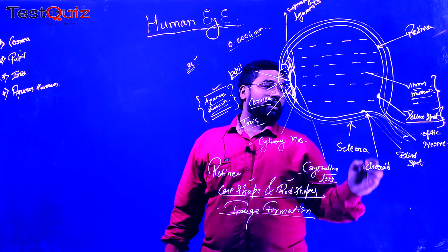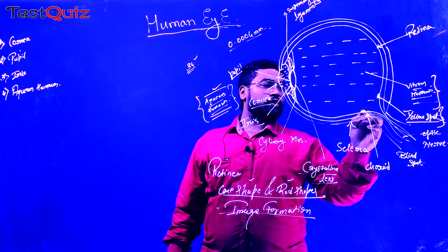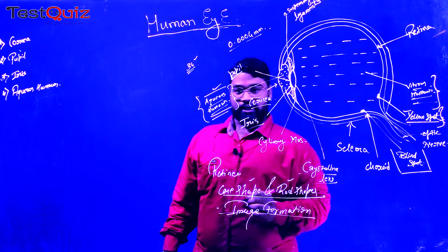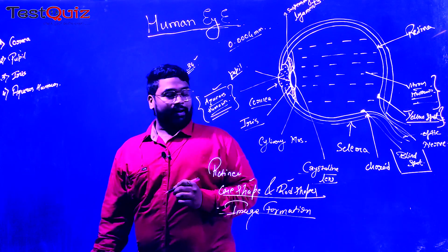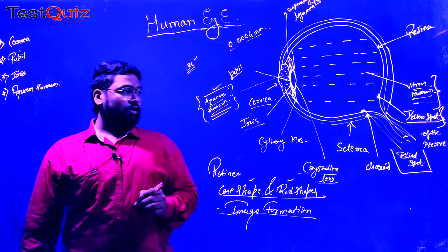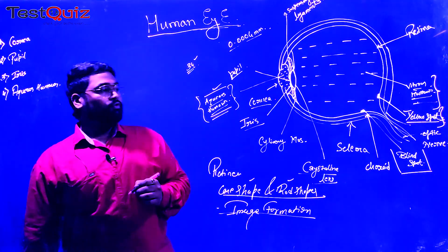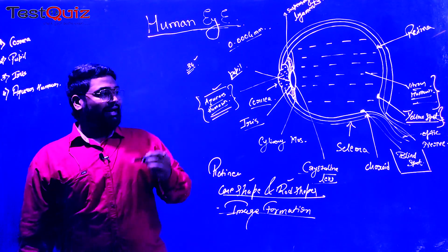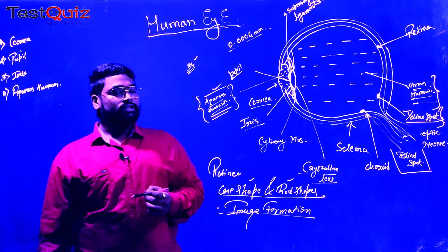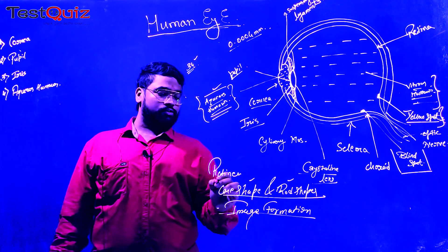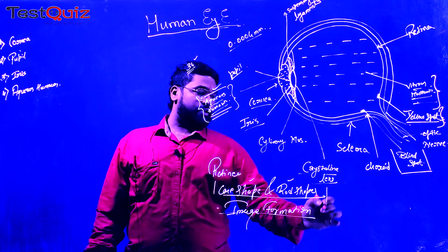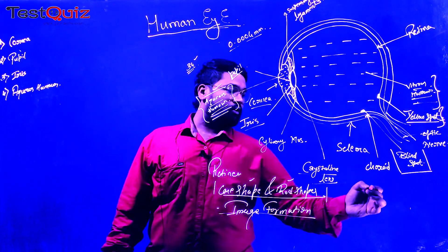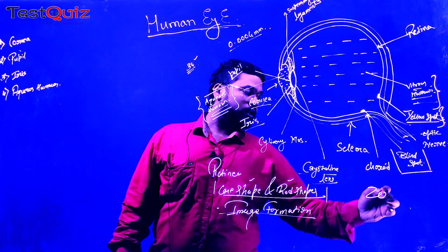We also have a new spot in the human eye — that particular spot is the blind spot. The blind spot is a particular location where we don't have any kind of cone-shaped cells and rod-shaped cells. The presence of cone-shaped cells and rod-shaped cells in the blind spot will be completely zero.